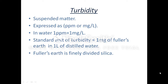The turbidity of water is expressed as parts per million or milligram per litre. In water, 1 part per million is equal to 1 milligram per litre. The standard unit of turbidity is 1 milligram of fuller's earth dissolved in 1 litre of distilled water, or 1 part of fuller's earth in million parts of water. Fuller's earth is finely divided silica.